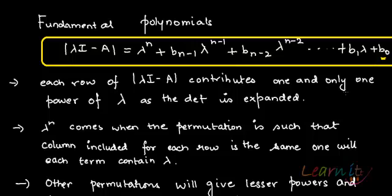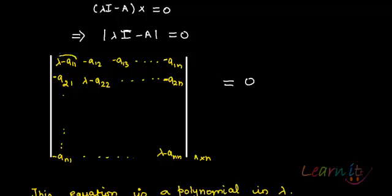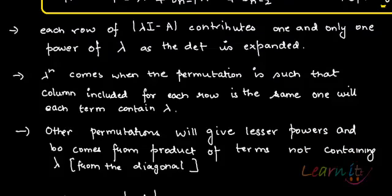Lambda n comes only when the permutation is such that column included for each row is the same one, with each term containing lambda. Lambda n you will get when you have a lambda term outside and inside a determinant, then lambda will get multiplied n number of times. Other permutations will have lower powers of lambda, and at the end you will only have the product of diagonal terms which do not contain lambda, and that will be your constant term.